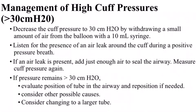Management of high cuff pressures: decrease the cuff pressure to 30 centimeters of water by withdrawing a small amount of air from the balloon with a 10 cc syringe. Listen for the presence of an air leak around the cuff during a positive pressure breath. If an air leak is present, add just enough air to seal the airway, then measure the cuff pressure again. If pressure remains greater than 30 centimeters of water, evaluate the position of the tube and reposition if needed. Consider other possible causes of high cuff pressures or consider changing to a larger endotracheal tube.